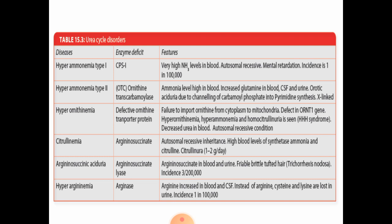Depending upon the marks, you can mention different diseases: hyperammonemia type 1, hyperammonemia type 2, hyperornithinemia (due to defect of ornithine transporter protein), citrullinemia, argininosuccinate aciduria, and hyperargininemia. For a 3-mark question, explain at least 3 disorders — the type of disease, the defective enzyme, and a brief word on its features.